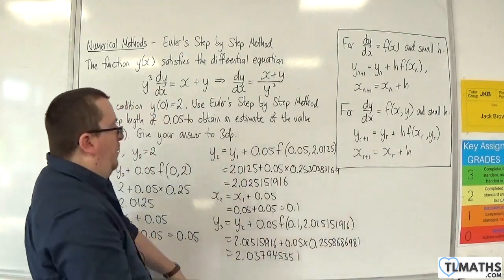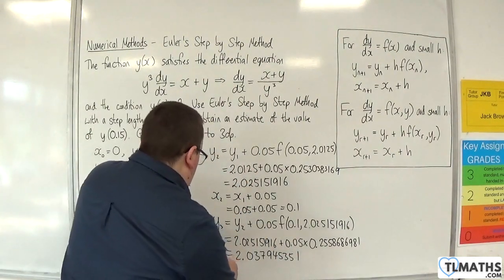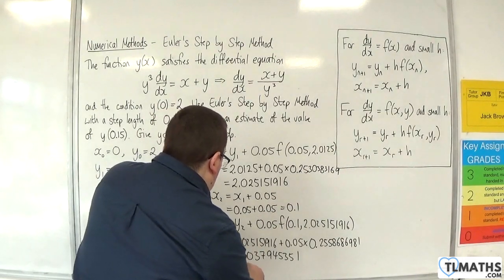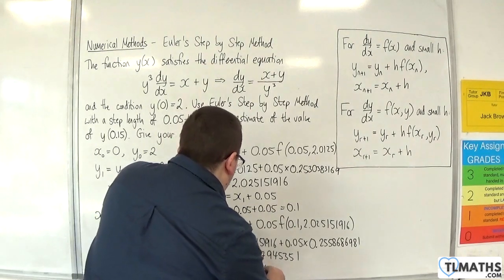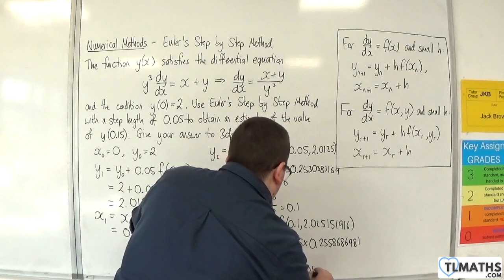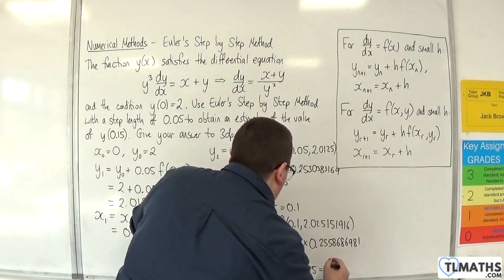Now the corresponding x value here, so x₃, would be the previous term, x₂ plus 0.05, which of course was 0.1 plus 0.05, which is your 0.15.